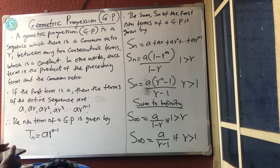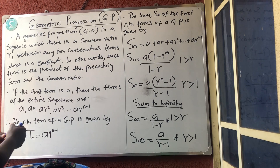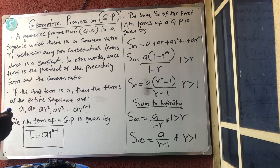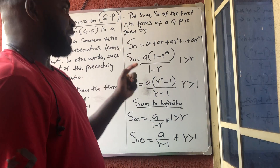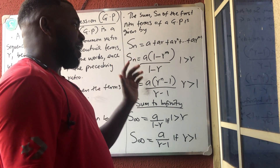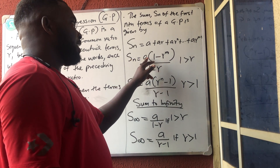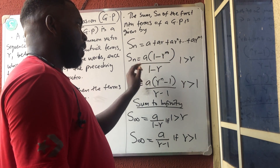The formula to get the nth term of a geometric progression is: T_n = A × R^(n−1). This formula is very important. For the sum of a geometric progression, the formula depends on whether R is less than 1 or greater than 1. The first formula is: S = A(1 − R^n) / (1 − R).